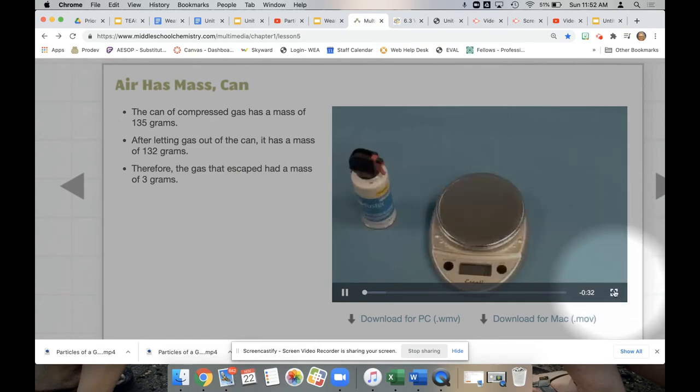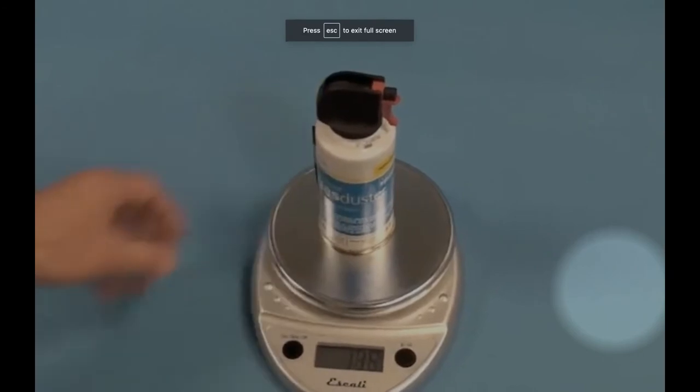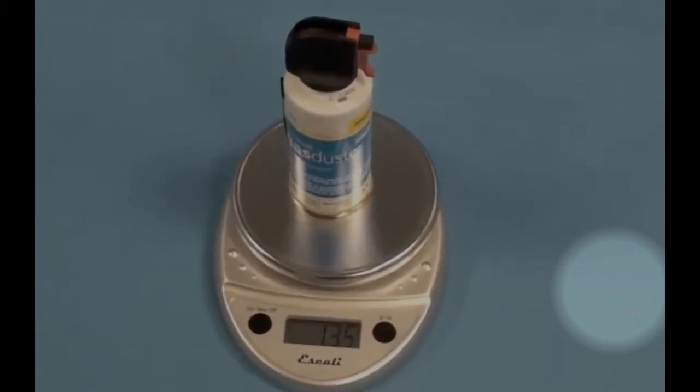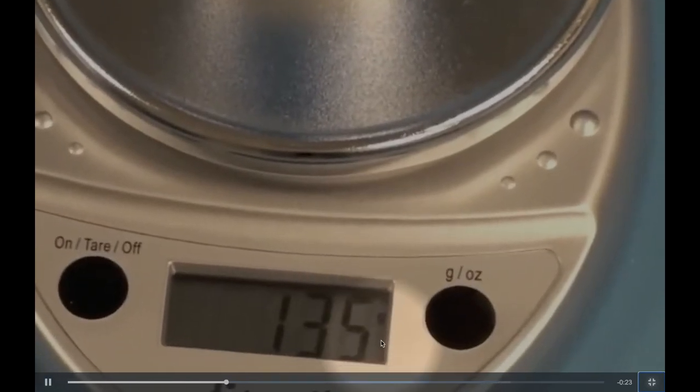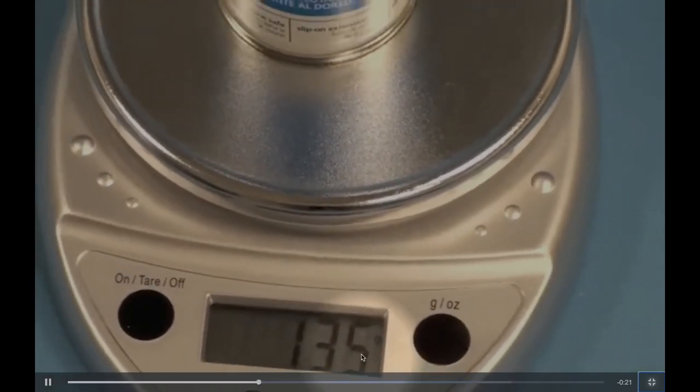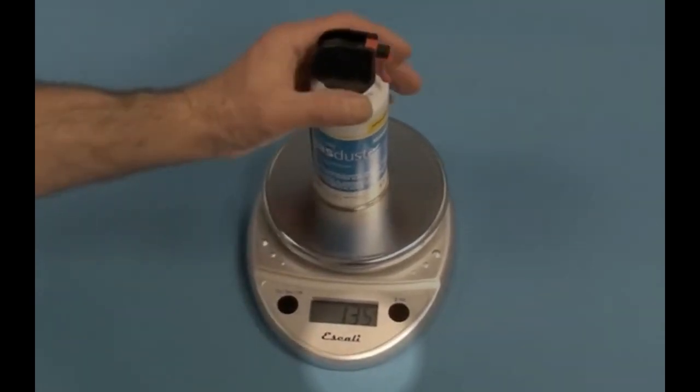So let's watch the video again. Here is the can of compressed air, or compressed gas. And we see, this is a duster, by the way, we see that the can has a mass of 135 grams. This is a full can.